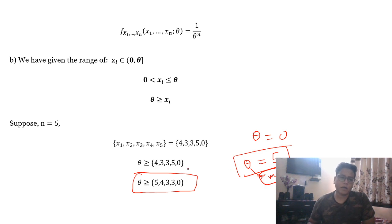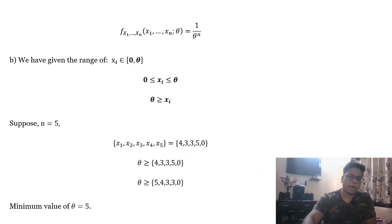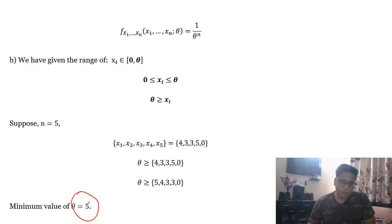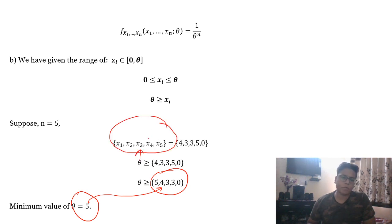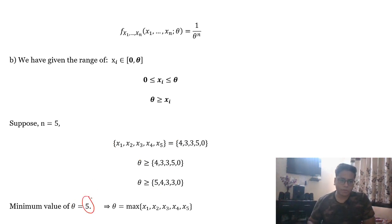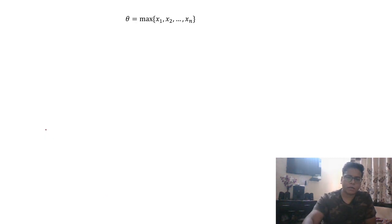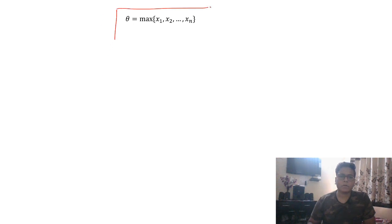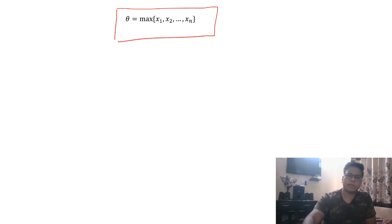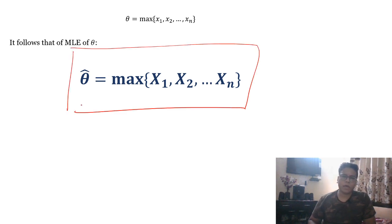The minimum possible value of θ from this set is 5. And 5 is nothing but the maximum of these numbers. So we can say θ equals the maximum of these 5 observations. Generalizing for n: θ has to equal the max of x₁ to xₙ. For the maximum likelihood estimator, θ̂ = max(x₁, x₂, ..., xₙ). This is your answer.